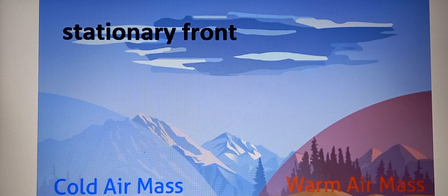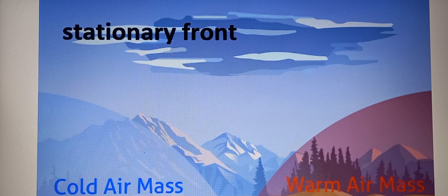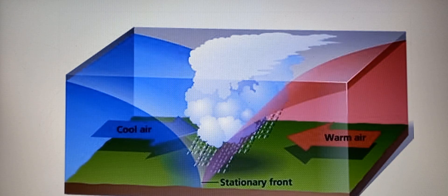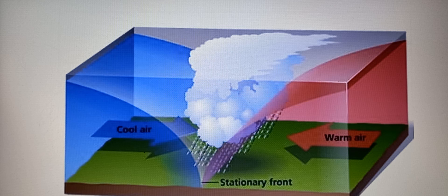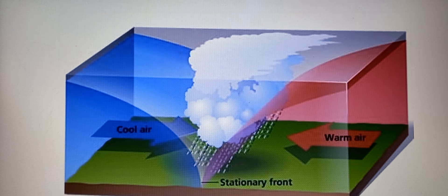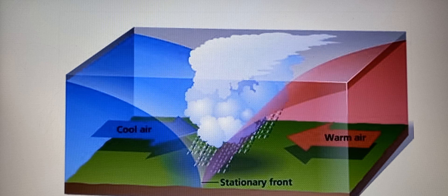There is typically a noticeable temperature difference across the front, contributing to cloud and precipitation formation. Weather near the stationary front can change frequently, leading to a mix of phenomena like rain, thunderstorms, fog, or snow. While the front itself doesn't move much, the frontal zone location can oscillate slightly, causing weather fluctuations over time.